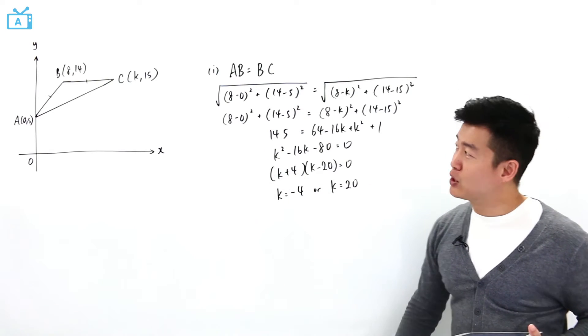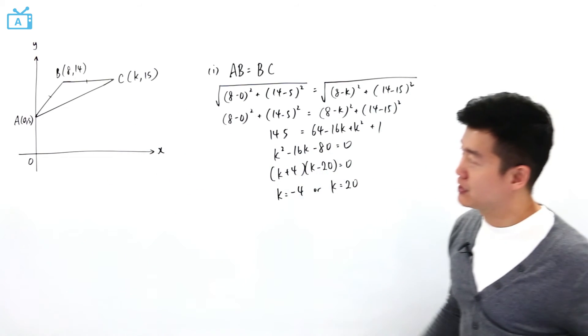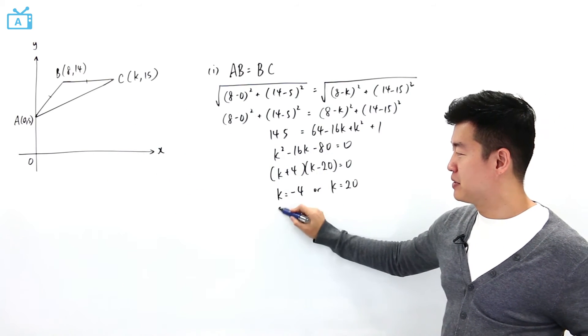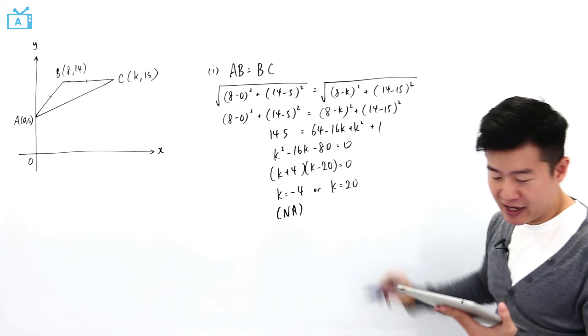But looking at the diagram, we know k, which is the x-coordinate of C, must be on the positive x-axis side, which means that this is not applicable. So k is equal to 20.